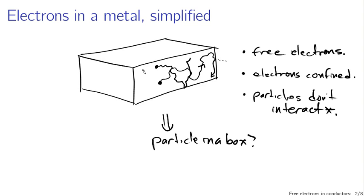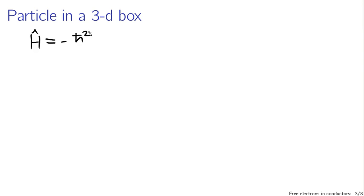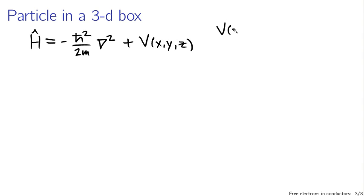The starting point is a single particle in a box. The single particle in a box in three dimensions is something we've talked about, and the Hamiltonian we're working with is essentially just the kinetic energy: h-bar squared over 2m times the gradient operator in three dimensions. We also have a potential, which is a function of x, y, and z.